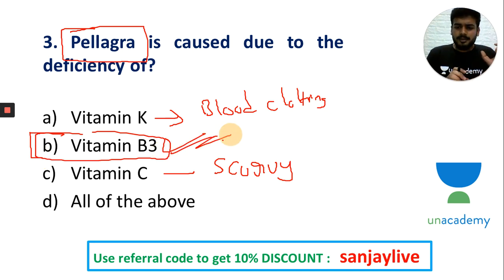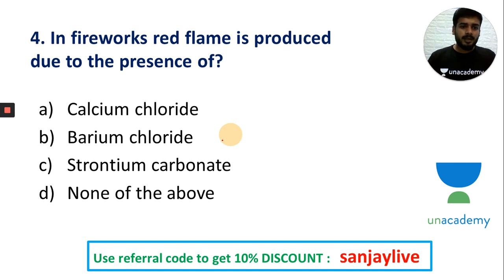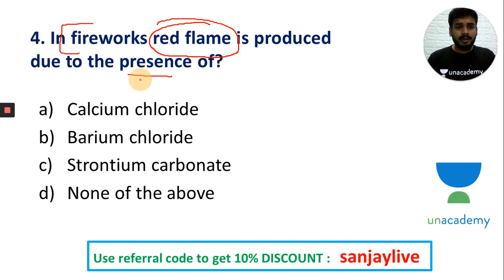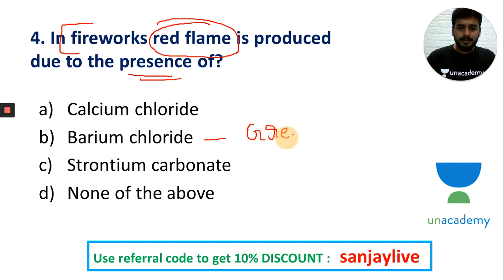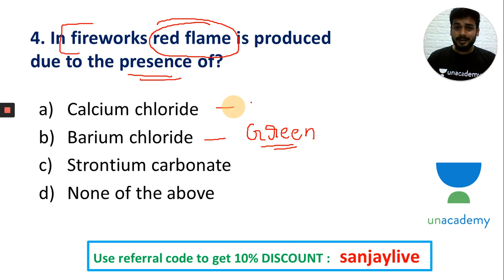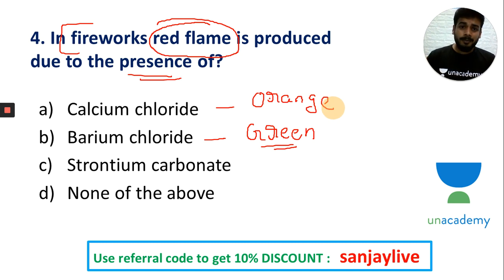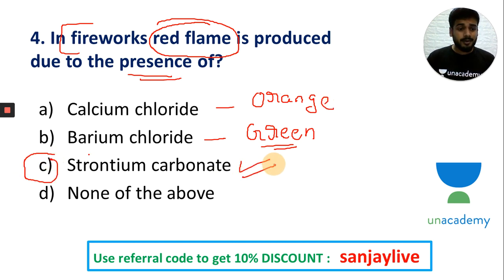Flame test colors: barium chloride gives a green flame. Calcium chloride gives an orange color flame. Copper compounds give a blue color flame. These are very important points to remember.